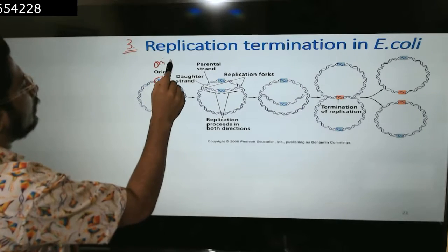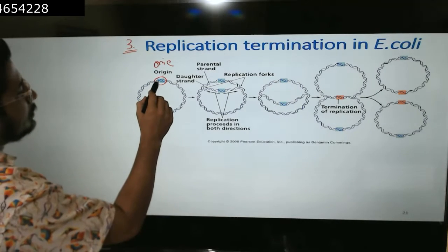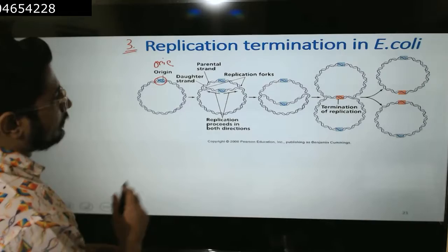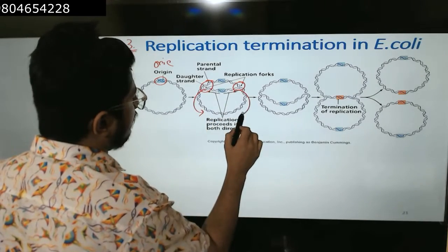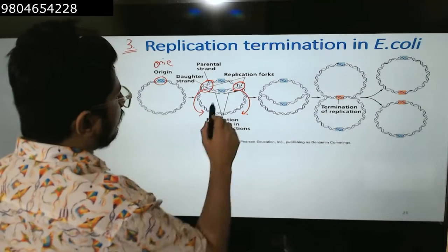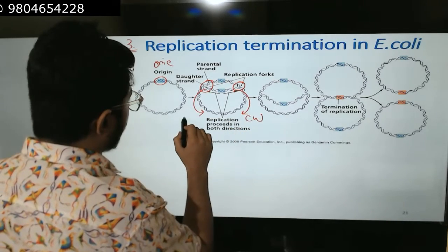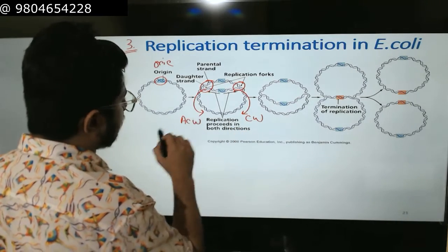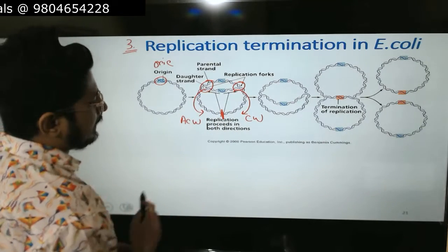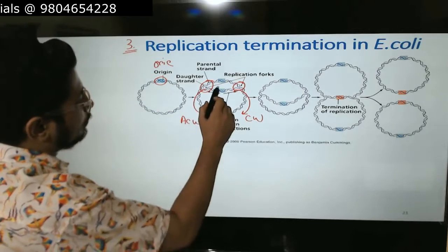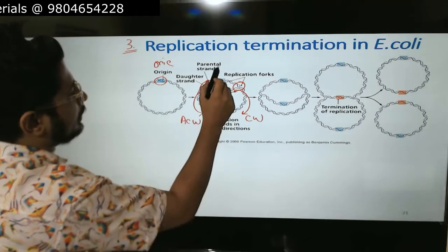This is the origin of replication, or oriC. This is where melting is done, two forks are created. Two forks will move in the opposite direction - one in clockwise direction, one in anti-clockwise direction. As I mentioned earlier, both these forks will meet at a same single point.